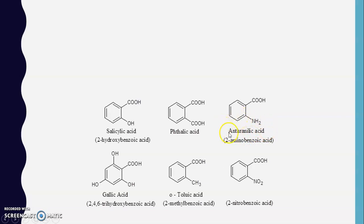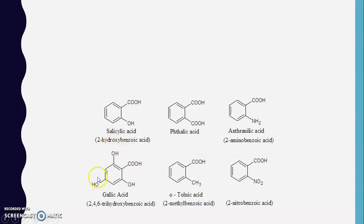Anthranilic acid is benzoic acid with an NH₂ (amino) functional group at the ortho position, giving the chemical name 2-aminobenzoic acid. Gallic acid has the benzoic acid skeleton with three hydroxyl groups at the second, fourth, and sixth positions, making its IUPAC name 3,4,5-trihydroxybenzoic acid. All such compounds are named as derivatives of benzoic acid.